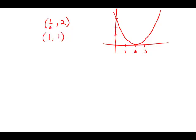So first of all, the question tells us about two points that are on the graph: one half comma two and one comma one. Then it tells us this crucial piece of information: the graph is symmetric with respect to the vertical line at x equals two.